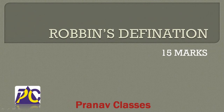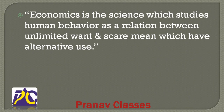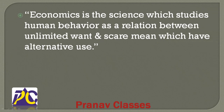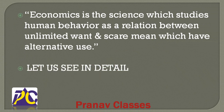This video is very unique and it is going to give you 15 marks. According to Professor Robbins, economics is a science which studies human behavior as a relationship between unlimited wants and scarce means. Please remember: unlimited wants and scarce means which have alternate uses.